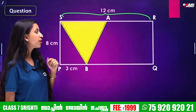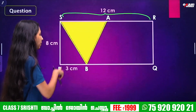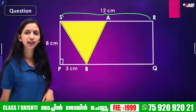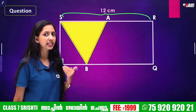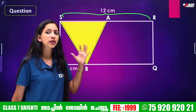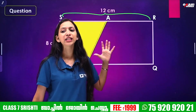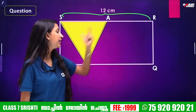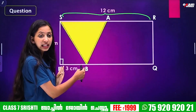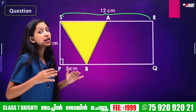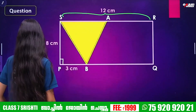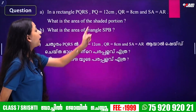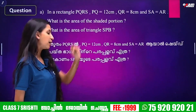There are triangles inside this rectangle. Triangle SPB is another triangle. We need to take measurements: the total length PQ is 12 cm. The length PB is 3 cm. The rectangle is PQRS, and PQ is equal to 12 cm.